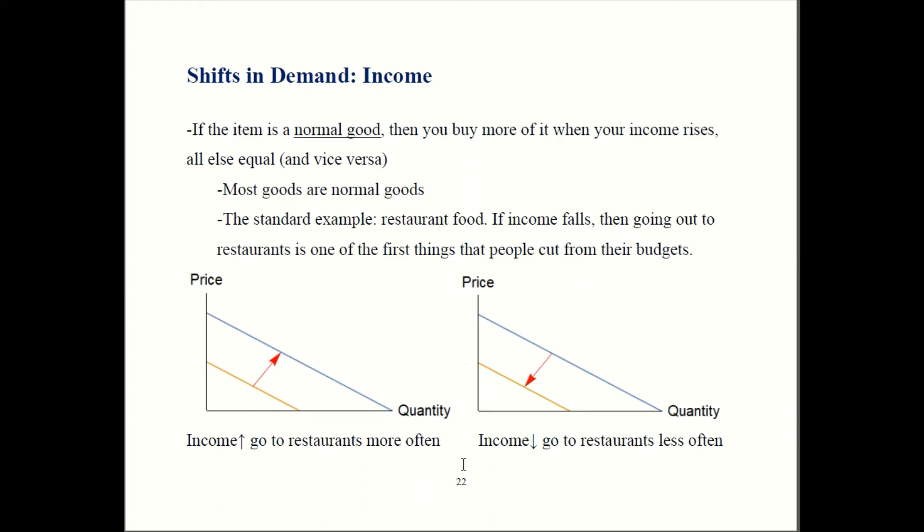It's called a normal good for a reason, because it is the normal case. Most goods fall into that category. The usual example in economics courses is restaurants. If the economy goes into a recession and people lose income, you have to start looking for things in your budget that you don't really need. Often when people do that, going out to restaurants is the first thing you cut. You make food at home more cheaply, so that's a pretty easy thing to drop from your budget.